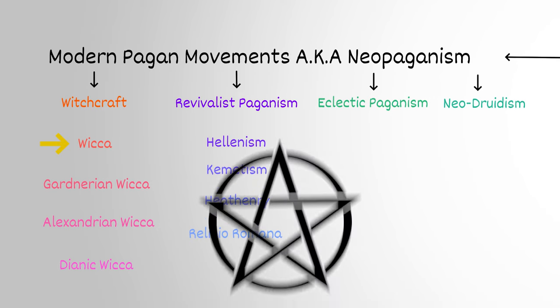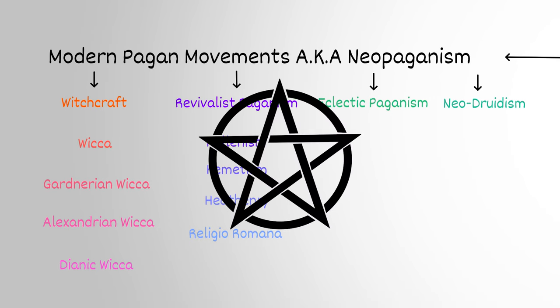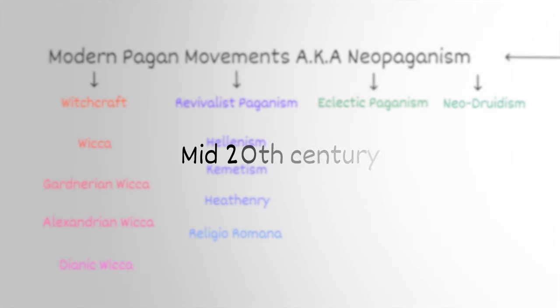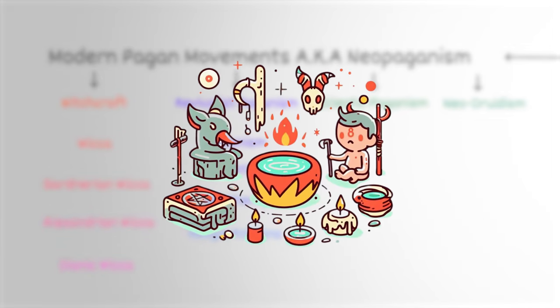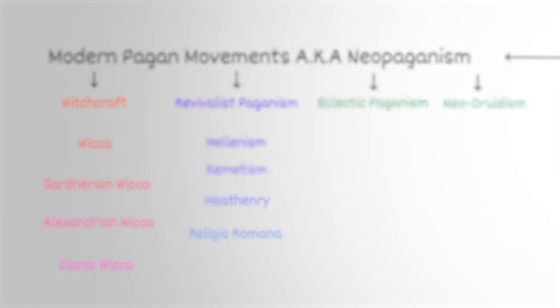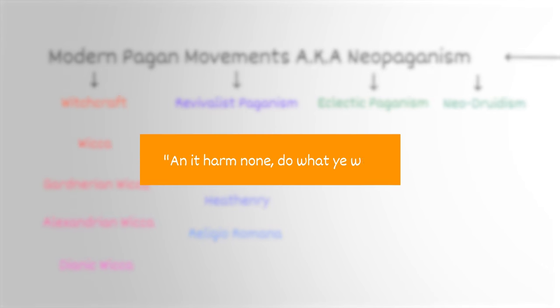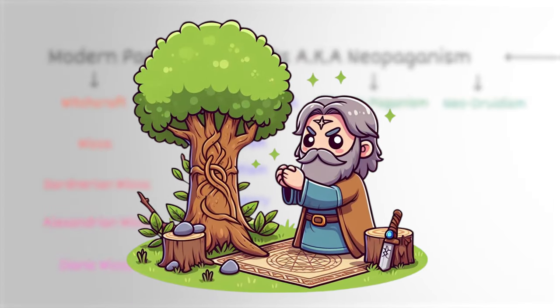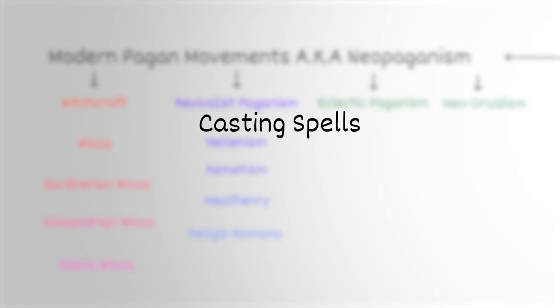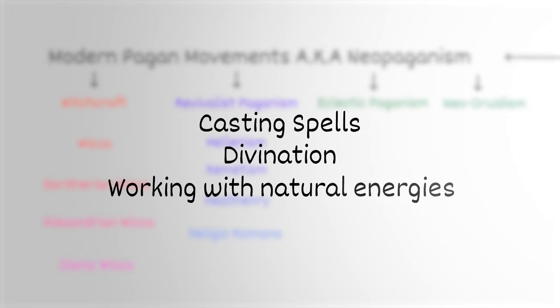The fastest growing and most prominent form of witchcraft is Wicca. Wicca is a modern Pagan witchcraft religion founded in the mid-20th century. It's known for its worship of a goddess and a god, its celebration of seasonal festivals known as sabbats, and its use of magic and ritual. Wiccans follow a moral code expressed in the Wiccan Rede: 'and it harm none, do what you will,' emphasizing personal responsibility and harmlessness. Wicca values nature, sees the divine in all things, and often involves practices like casting spells, divination, and working with natural energies.